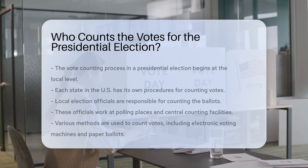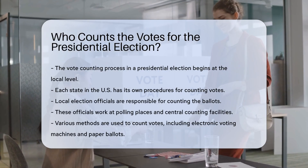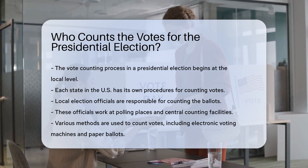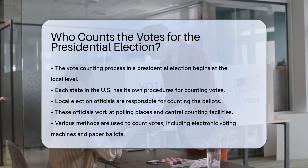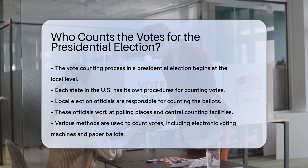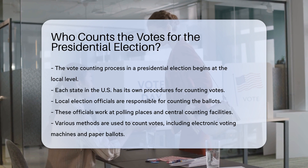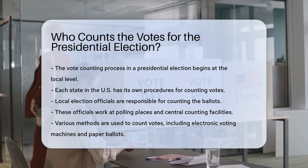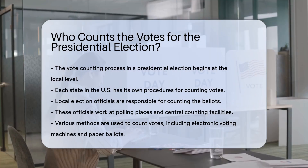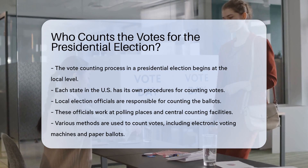The process of counting votes in a presidential election starts at the local level. Each state in the U.S. has its own procedures for counting votes. Local election officials are responsible for counting the ballots. These officials work at polling places and central counting facilities, and they use various methods to count the votes, including electronic voting machines and paper ballots.